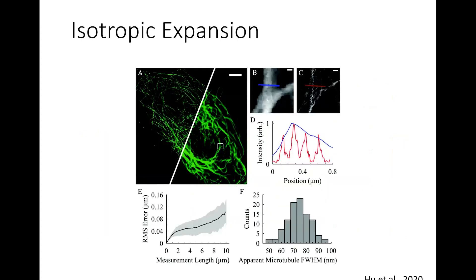So this creates an isotropic expansion. A variety of studies have been done to show any changes that we might see. And if you look at E in this figure, the RMS error is just a fraction of the length. So generally, this is going to be under 1% change that you will find from the original sample.